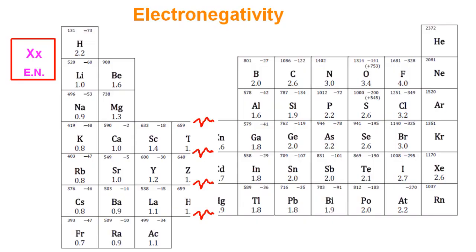So here's the data booklet version. Electronegativity is defined as the attraction of an atom for a bonded pair of electrons. You can just think about it as the attraction for an electron.